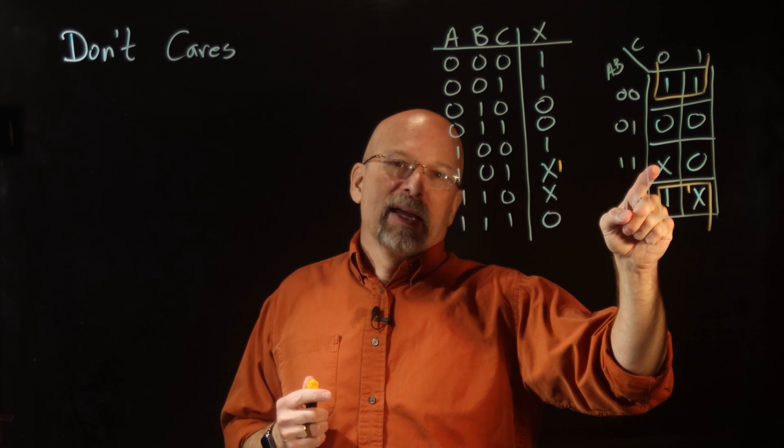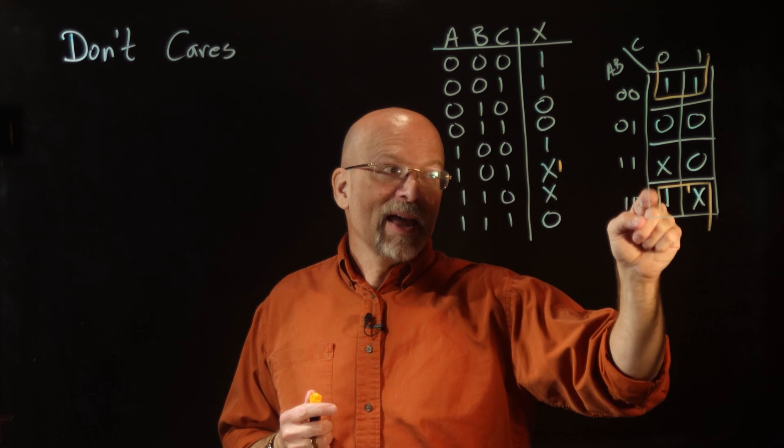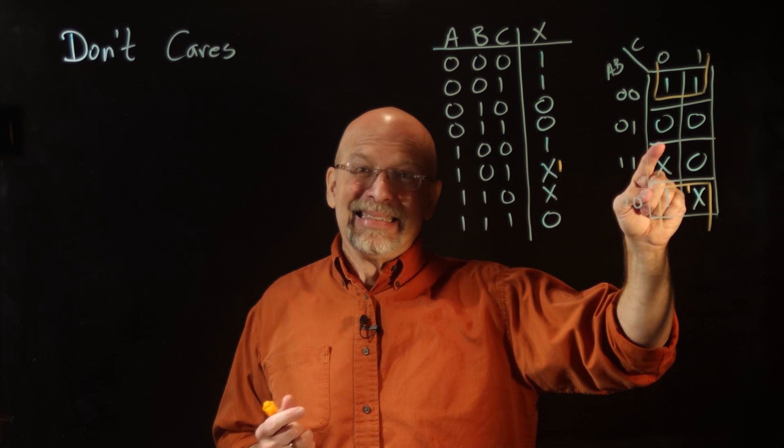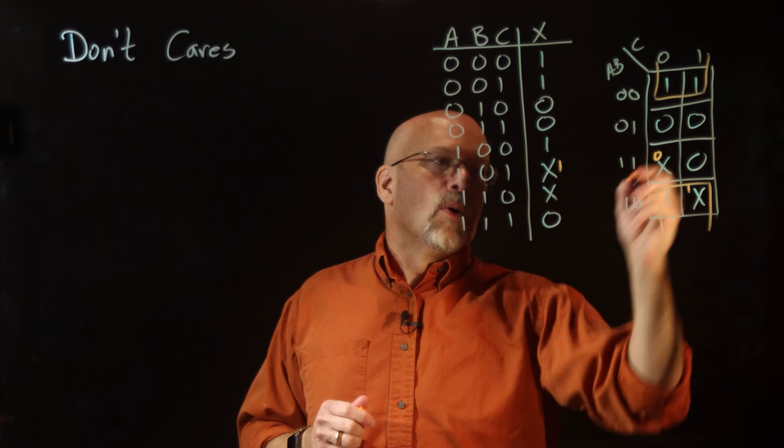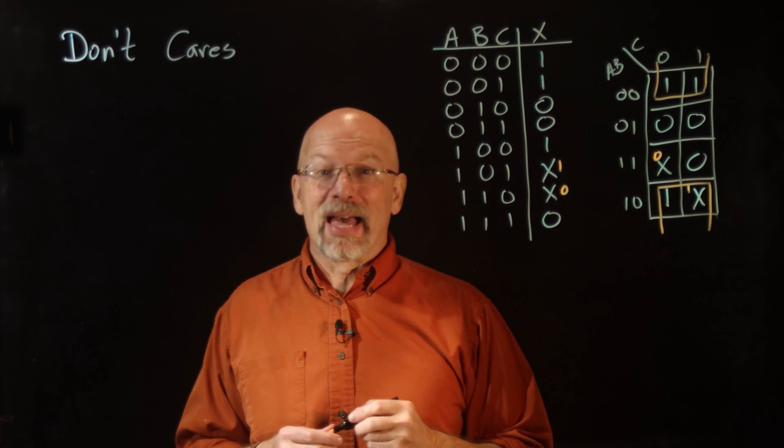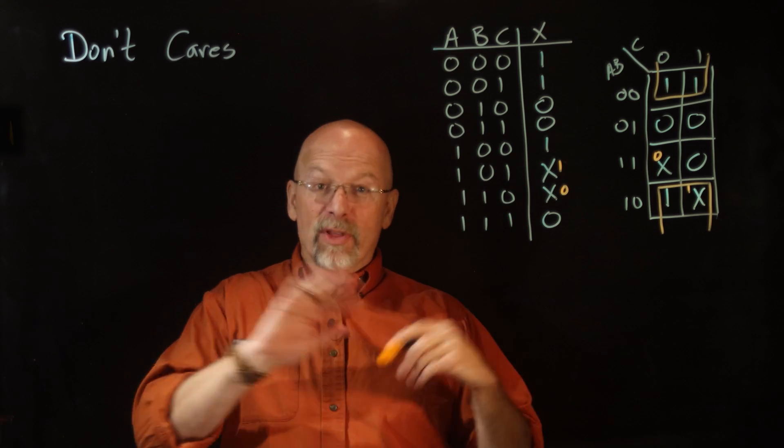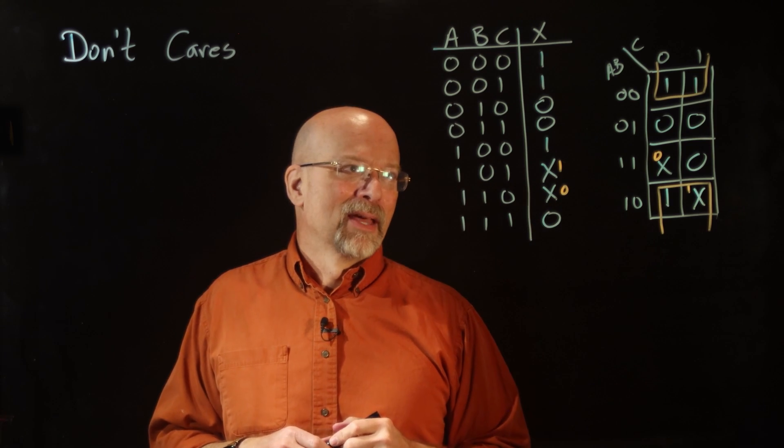Now, what about this X right here? Well, if I make this X a 1, I have to add another rectangle. Not cool. If I make it a 0, however, we're done. We're done. And so this X is best. The best way it can go with its wildcard scenario is to make it a 0.